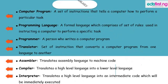In summary, a computer program is a set of instructions that tells a computer how to perform a particular task. A programming language is a formal language comprising a set of rules used in instructing a computer to perform a specific task. A programmer is a person who writes a computer program. A translator is a set of instructions that converts a computer program from one language to another. The assembler translates assembly language to machine code. A compiler translates a high-level language into a lower-level language, and an interpreter translates a high-level language into an intermediate code.